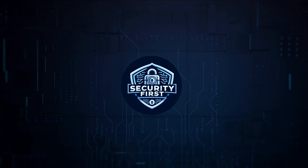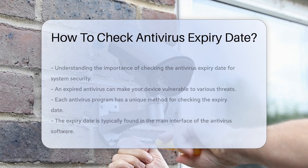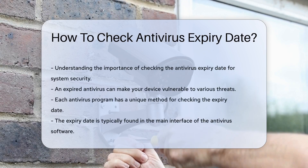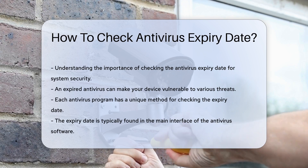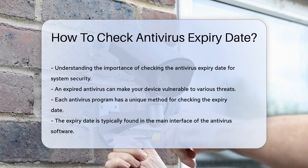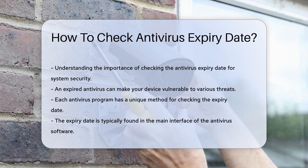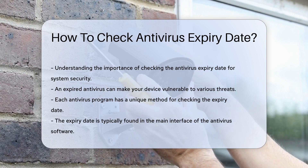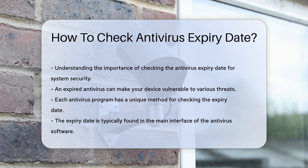Security First Corp. Safety through knowledge. How to check antivirus expiry date. Understanding the expiry date of your antivirus software is crucial for maintaining your system's security. An expired antivirus can leave your device vulnerable to threats. Each antivirus program has its own method for checking the expiry date, so it's essential to familiarize yourself with your specific software.